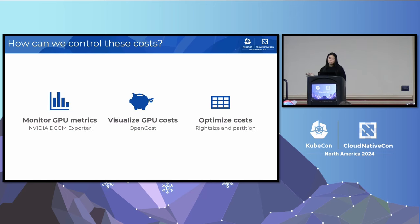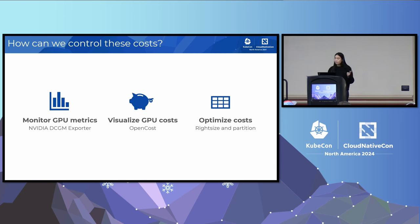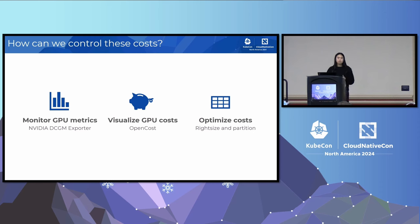There are three steps we'll walk through today. First, monitoring your GPU costs with the NVIDIA DCGM exporter. Second, visualizing GPU costs with OpenCost. And finally, optimizing your costs — you can do that through right-sizing your infrastructure, but we'll specifically be talking about partitioning techniques.